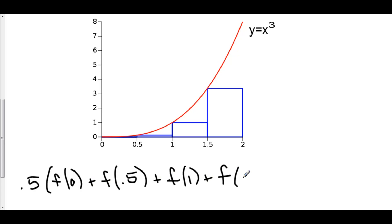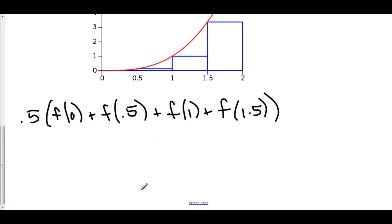We're left with f of 0 plus f of 0.5 plus f of 1 plus f of 1.5. So when you plug in these numbers into x cubed, we have 0.5 times 0 cubed is 0, 0.5 cubed is 1 eighth, 1 cubed is 1.